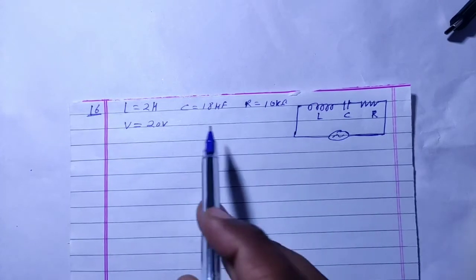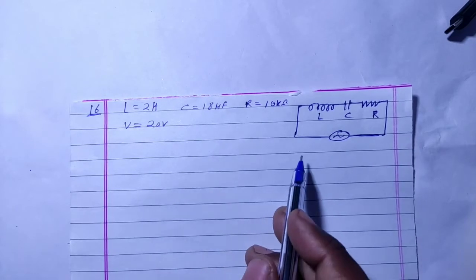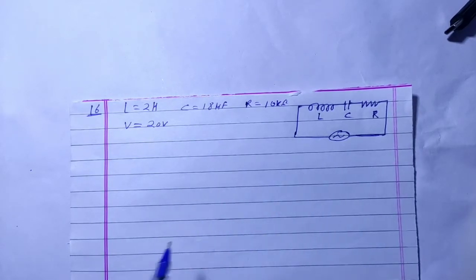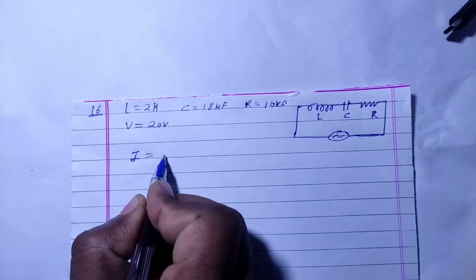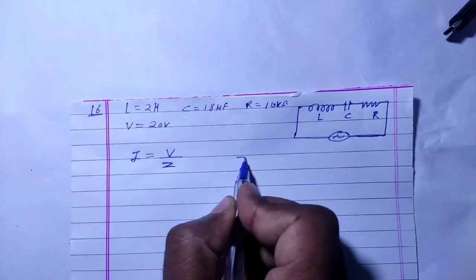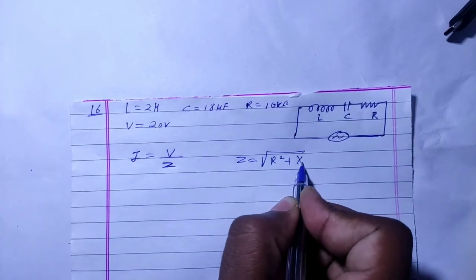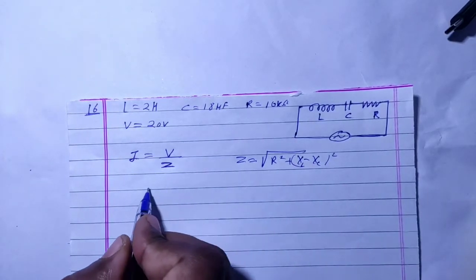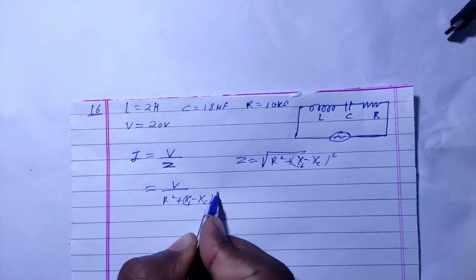We have this LCR circuit where L, C, and R are given, and the potential is given. For maximum current, the formula is I = V divided by impedance Z, where impedance Z is the square root of R squared plus (XL minus XC) whole squared. So current I = V divided by √(R² + (XL - XC)²).